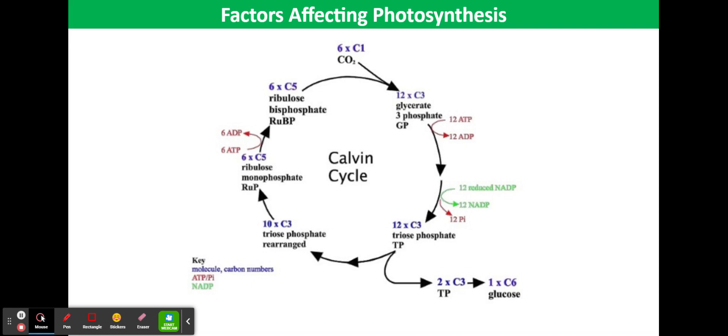This reduces the amount of carbon dioxide being accepted by RUBP and consequently reduces the quantity of GP and therefore of TP being produced, whilst initially causing an accumulation of RUBP. However, due to a lack of TP, RUBP cannot be regenerated.